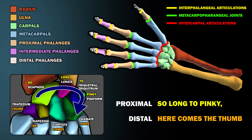The mnemonic goes in a little circle, starting with the proximal carpal bone nearest the thumb and ending with the distal carpal bone nearest the thumb. Remember that the trapezium is the bone nearest the thumb. Both the trapezoid and the trapezium have a T in them, so don't confuse them. Also, pinky stands for pisiform, which is the proximal carpal bone nearest the pinky.